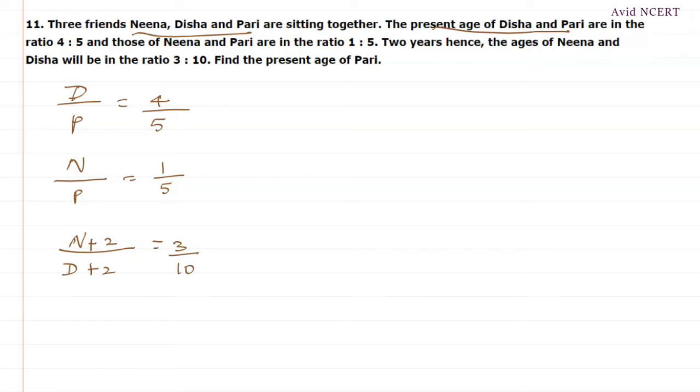So, find the present age of Pari. From the first equation, we can find that D equals 4P by 5. Cross multiplication. And from the second equation, we know that Neena equals P by 5.